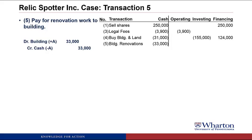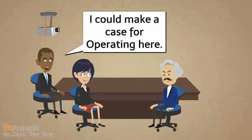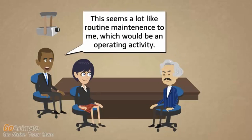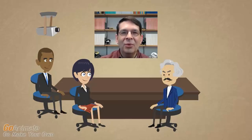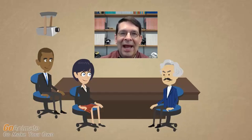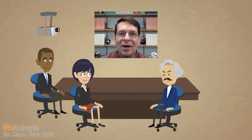Transaction number five: Relic Spotter paid $33,000 cash for renovation work to the building. The answer is investing — a $33,000 investing cash outflow. The key question is whether this expenditure represents a capital improvement or routine maintenance. A capital improvement increases the value of the building or its useful life; we add it to the building account and depreciate it over time, making it an investing activity. Routine maintenance gets expensed immediately and is an operating cash flow.